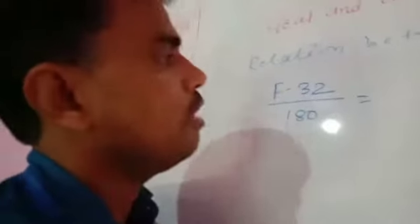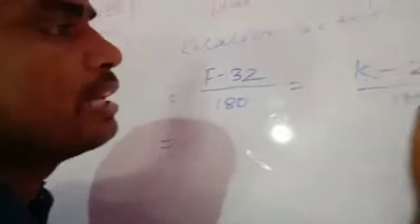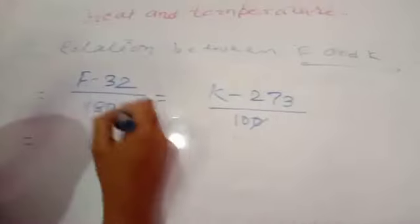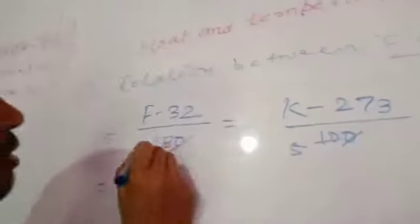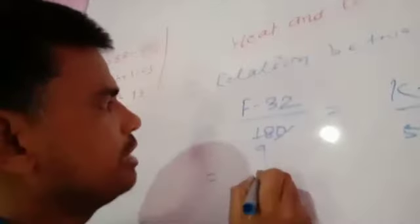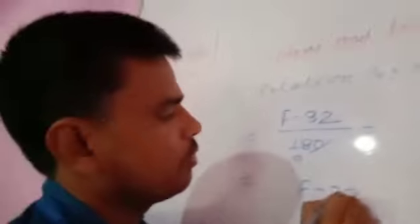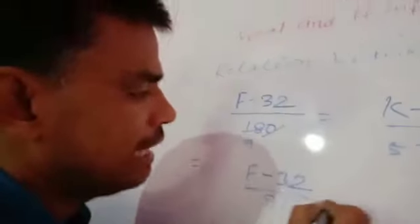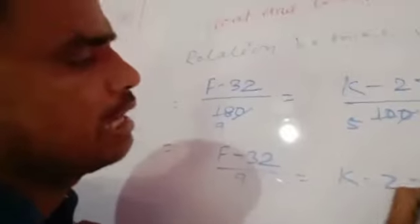Now, if you want to solve it, you can solve it. In the previous class, I told you that it will simplify. It will be 5 and it will be 9. So F minus 32 by 9 is equal to K minus 273 by 5.